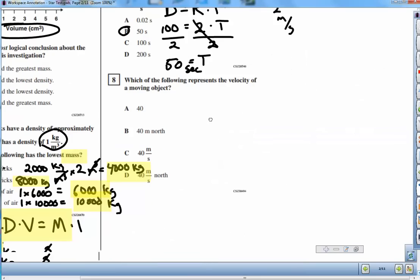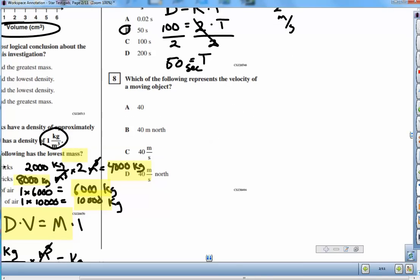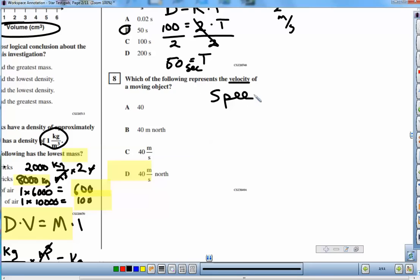Okay, which of these represents the velocity of a moving object? Velocity is speed with direction. So you really need to have a direction added in here. By direction, we mean north, south, east, west, up, down.